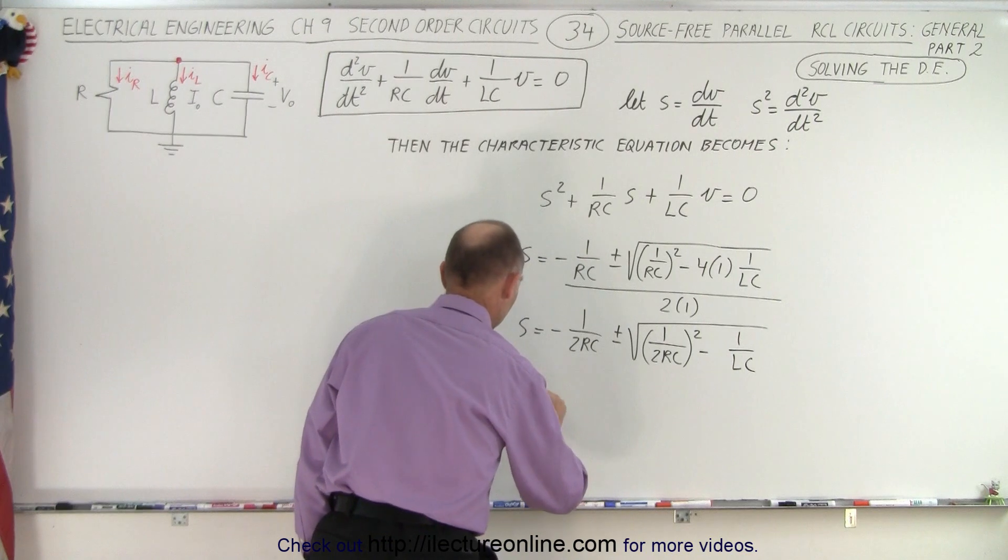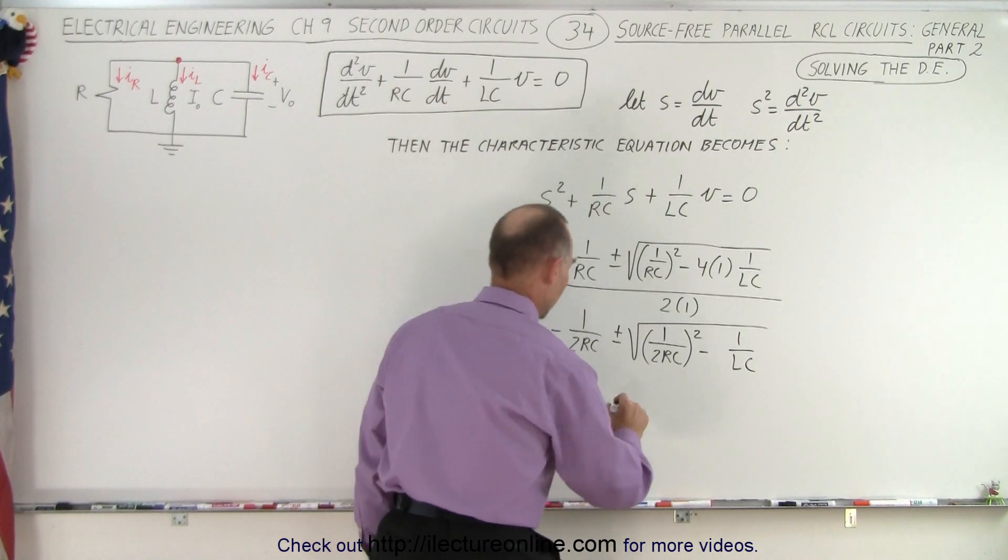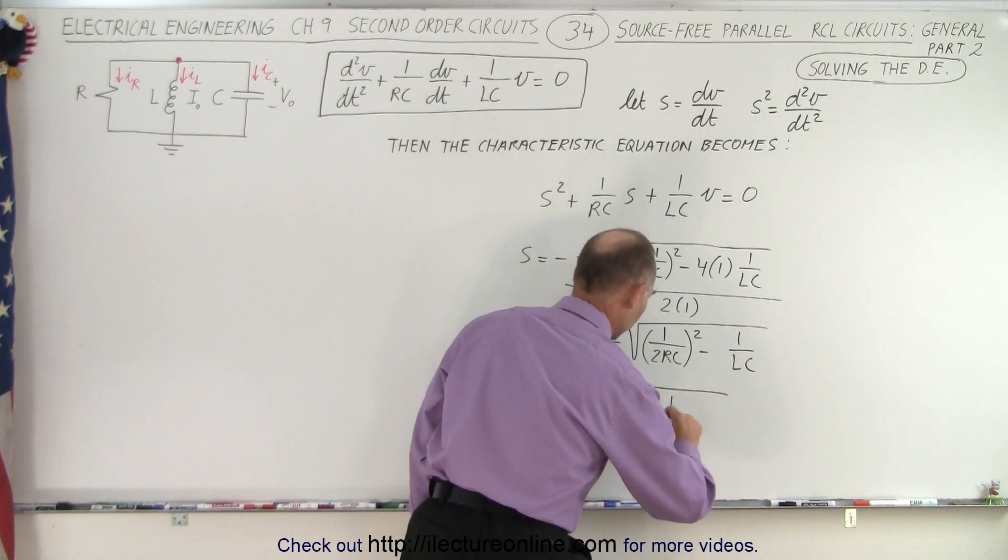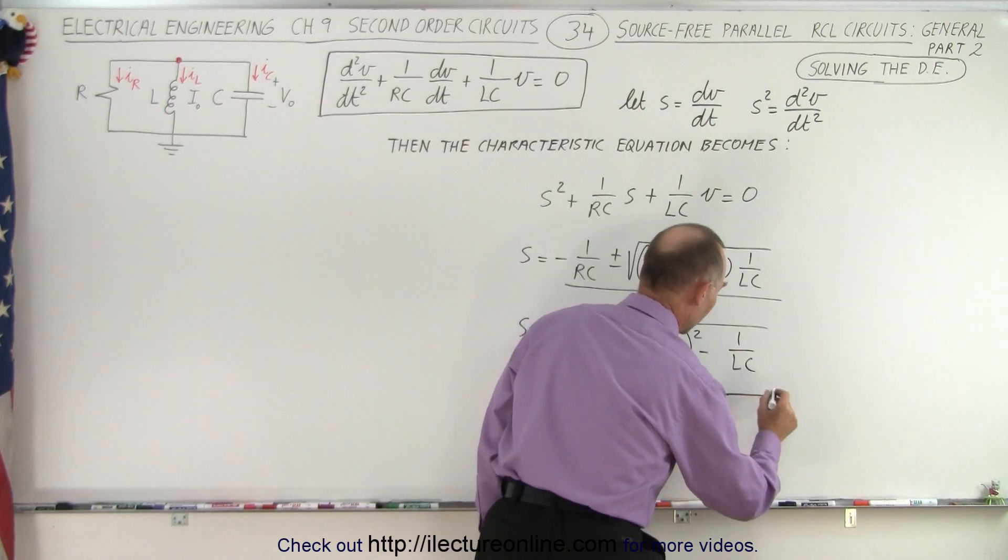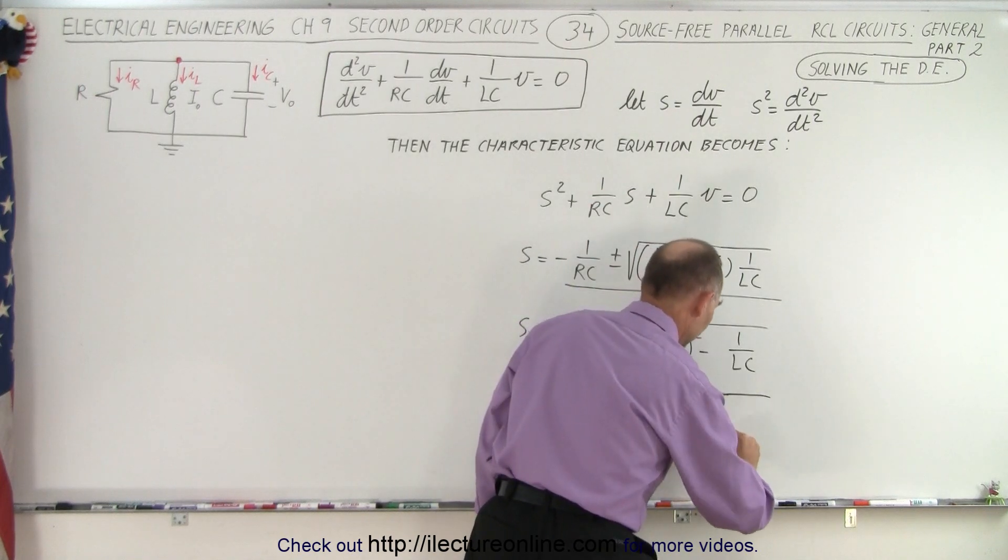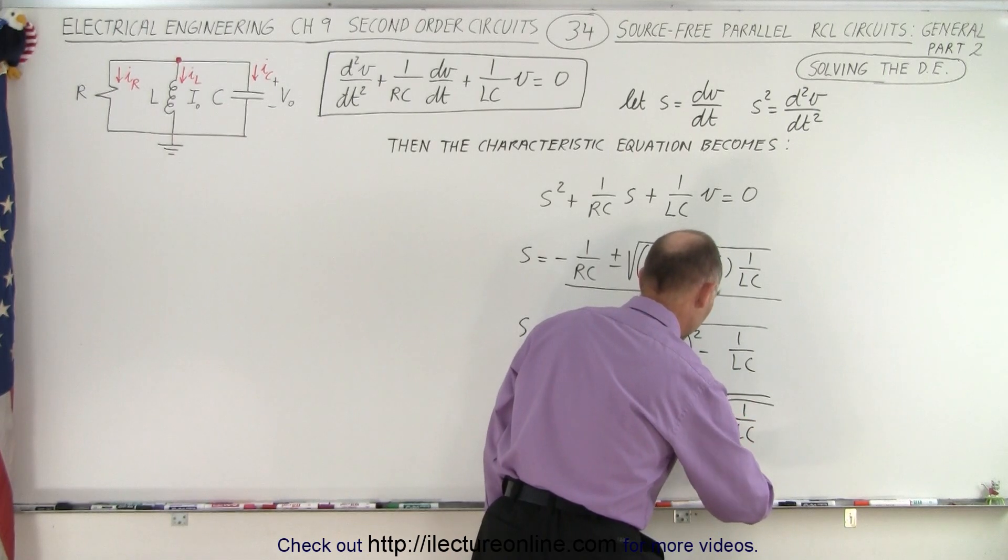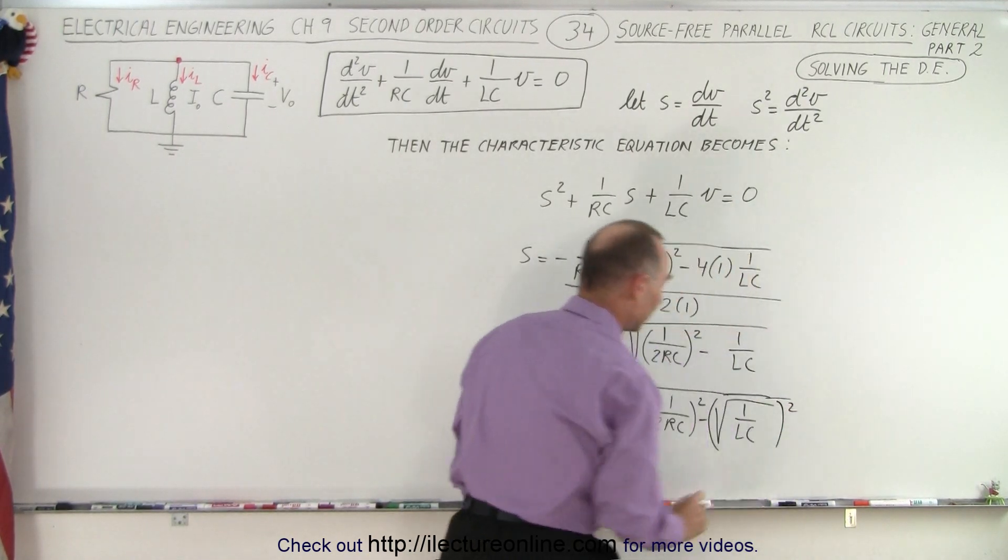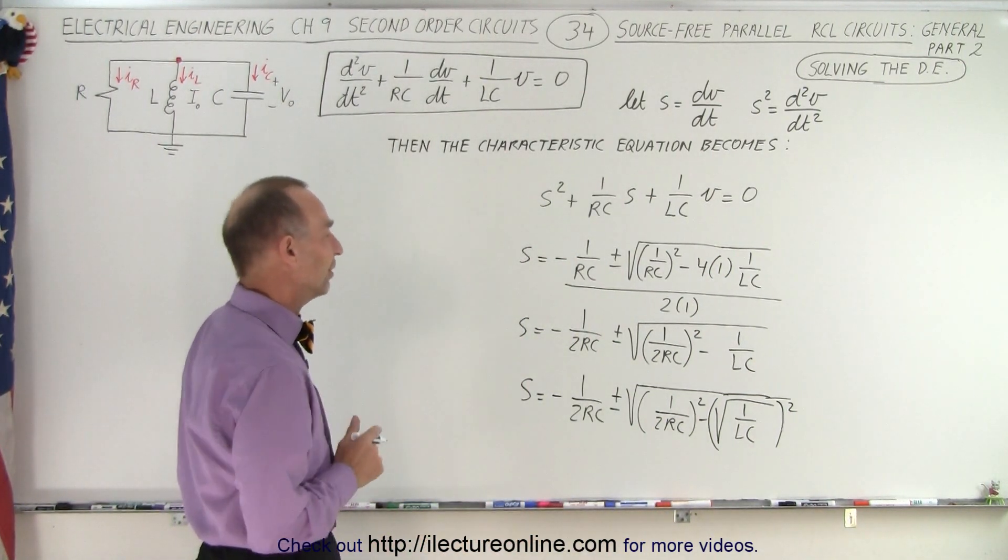Now we're going to rewrite it as such: S equals minus 1 over 2RC, plus or minus the square root of quantity 1 over 2RC squared. And this we're going to write by squaring it and taking the square root at the same time, so we take the square root of 1 over LC and we're going to take the whole thing and square it again. There's a reason for that.